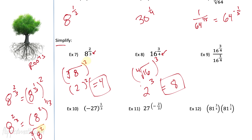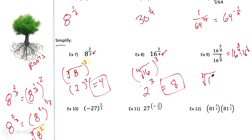The rule for exponents when you're dividing with a common base is you subtract the exponents. This equals 16 to the 3/4 minus 1/4, which is 2/4, the same as 1/2. So this is 16 to the 1/2 power, which is the square root of 16. You don't need to write that 2. And that all equals 4.